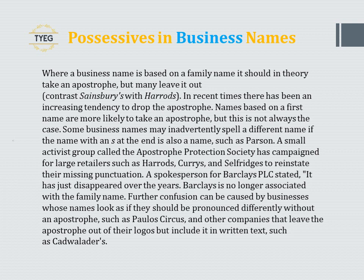Where a business name is based on a family name it should in theory take an apostrophe, but many leave it out — contrast Sainsbury's with Harrods. In recent times there has been an increasing tendency to drop the apostrophe. A small activist group called the Apostrophe Protection Society has campaigned for large retailers such as Harrods, Currys, and Selfridges to reinstate their missing punctuation. A spokesperson for Barclays plc stated, 'It has just disappeared over the years — Barclays is no longer associated with the family name.' Further confusion can be caused by businesses whose names look as if they should be pronounced differently without an apostrophe, such as Paulos Circus.